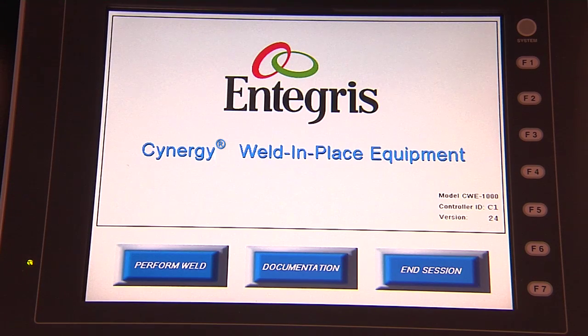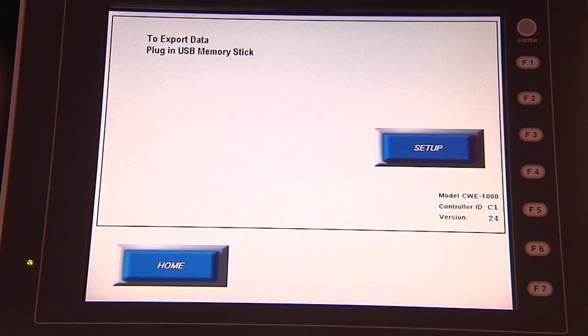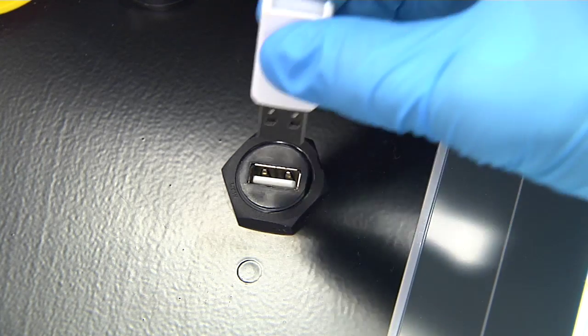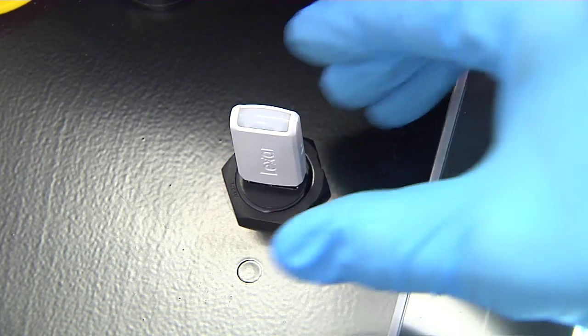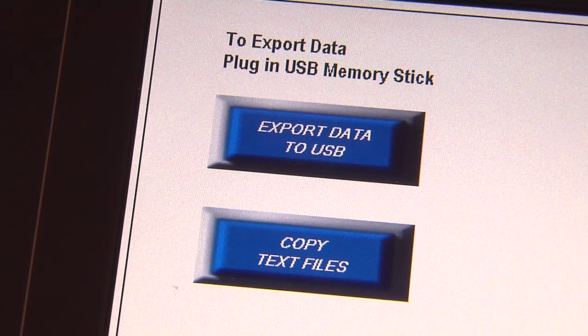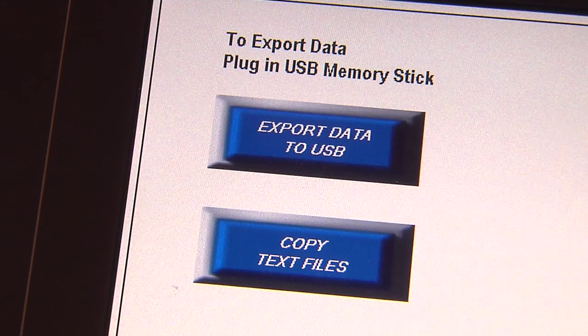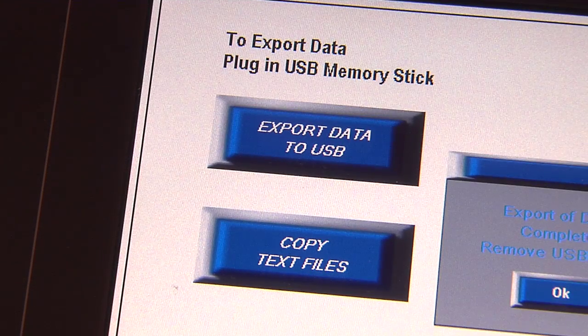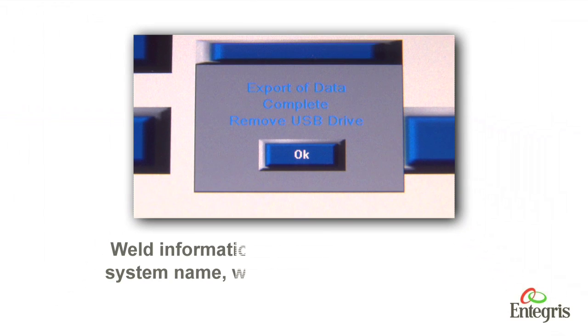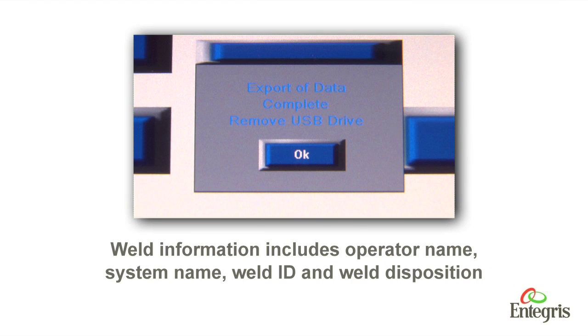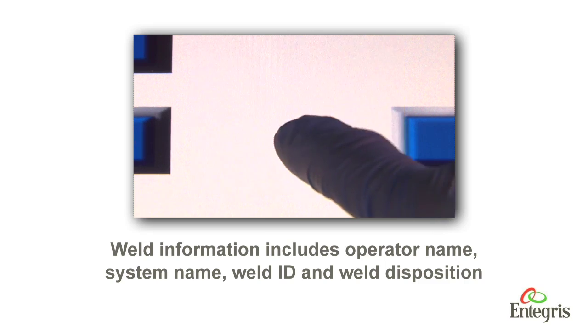To download weld information, select Documentation from the Home screen. Insert a USB flash drive into the USB port on the controller. To download weld data, select Export Data to USB. Weld information including operator name, system name, weld ID, and weld disposition data will be downloaded to the USB drive.